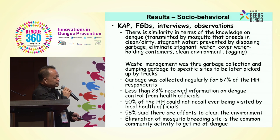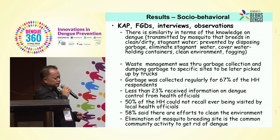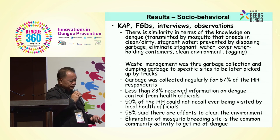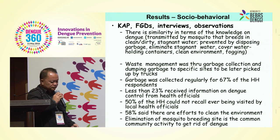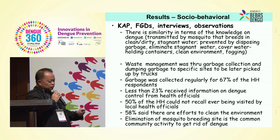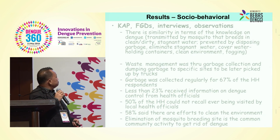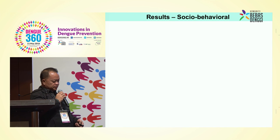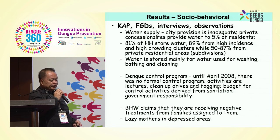For knowledge, attitudes, and practices, focus group discussions, and interviews: there is similarity in terms of knowledge on the way mosquitoes are transmitted and breed. Waste management was through garbage collection and dumping to specific sites to be later picked up by trucks, but essentially they have a problem in garbage disposal. There is also a problem in water supply — 81% of households store water, 89% from high incidence and high crowding clusters, while 50% to 87% from high private residential areas.